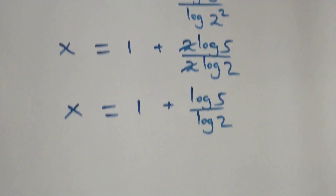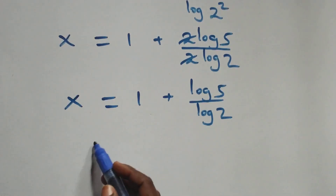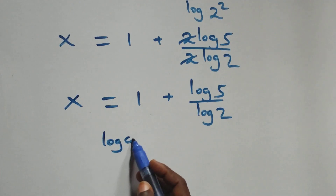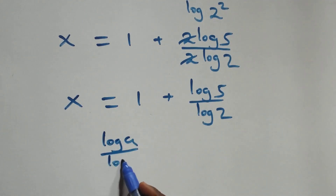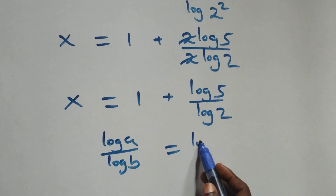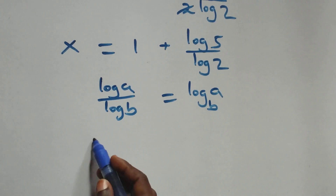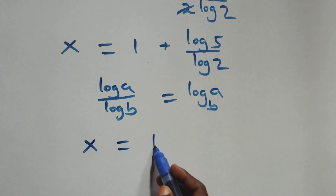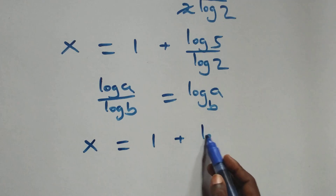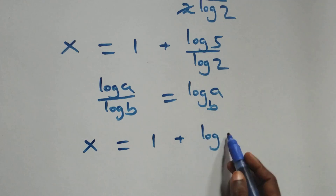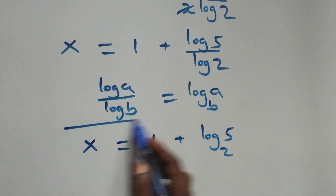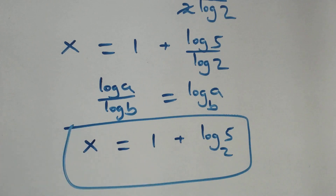Then, next step, we apply the change of base formula. When we have log a over log b, this is the same as log a to base b. So what we have becomes x equals 1 plus log 5 base 2. The value of x is: x equals 1 plus log₂5.